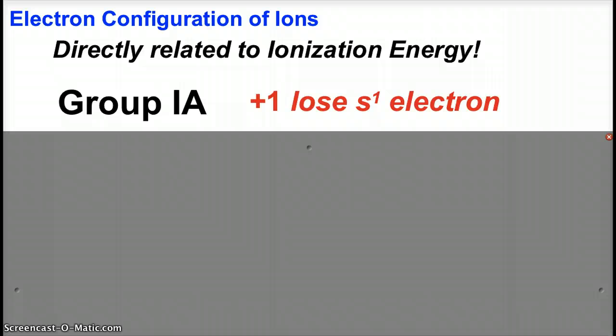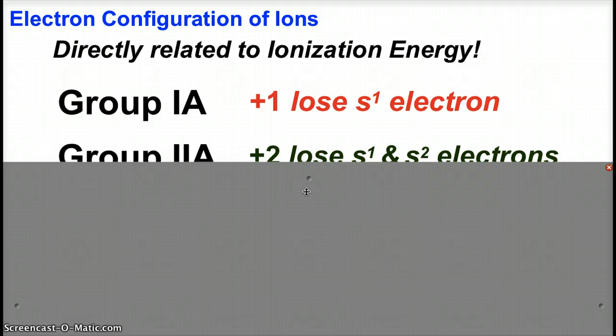This should just be a quick review. All the different groups, especially our main group elements, the representative elements—this is how they are going to form the different ions. Group 1A, the alkali metals, will always form plus one ions by losing their s1 electron. The neighbors, the alkaline earth metals, will lose both of the s electrons and will always form plus two ions.